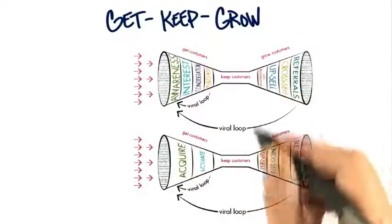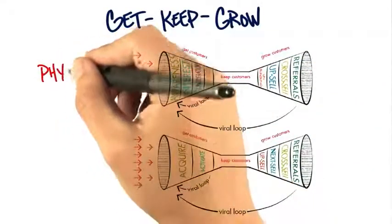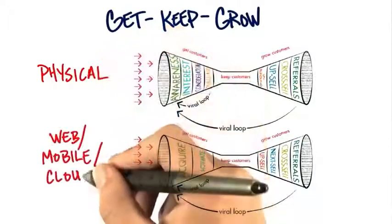Here are two get, keep, and grow funnels. And the one thing to notice is the one on the top represents a physical channel, and the one on the bottom is web mobile.